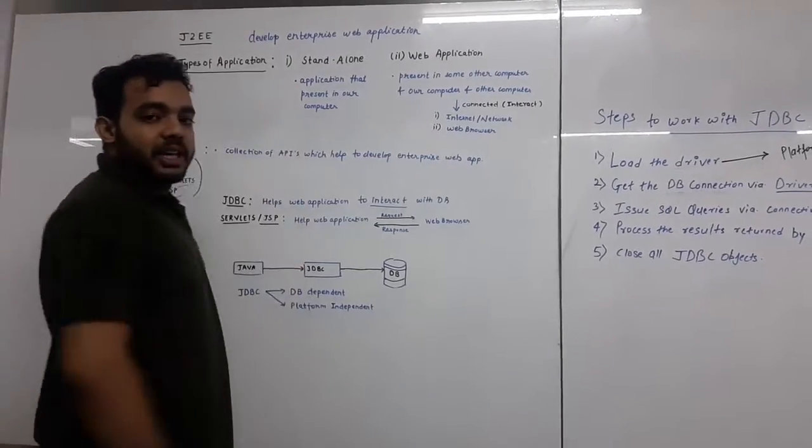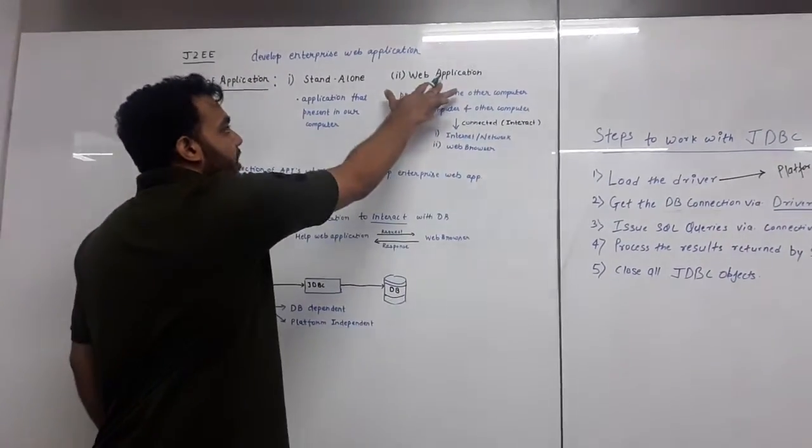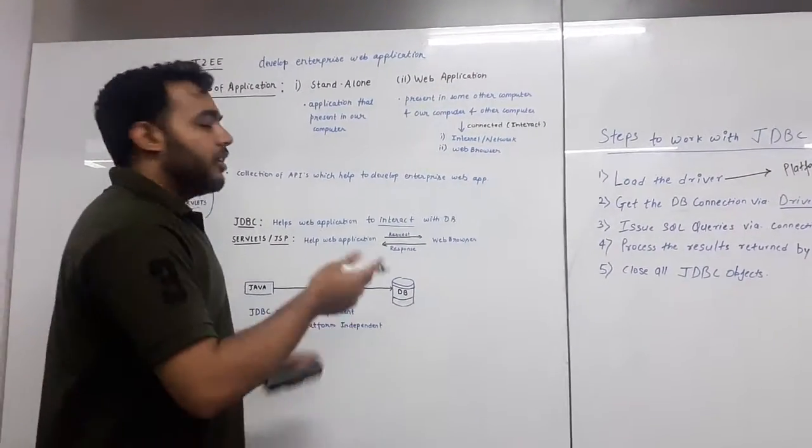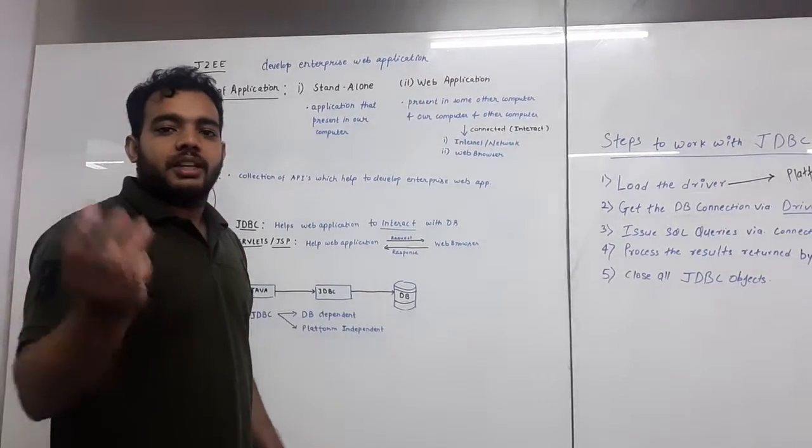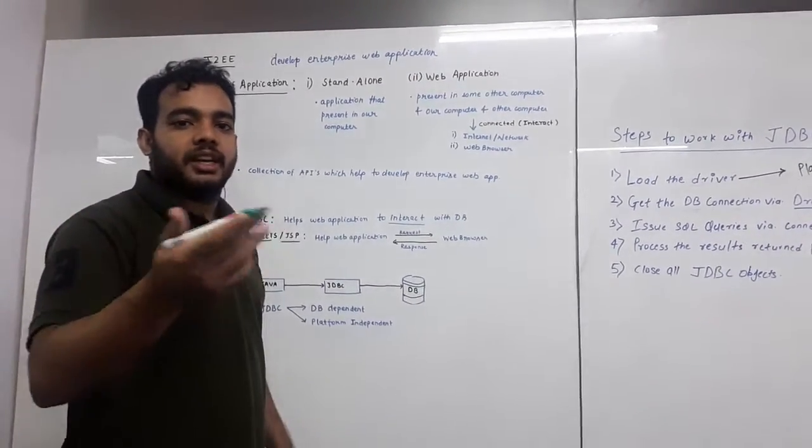There are two types of applications. One is standalone application and the other is web application. Standalone means the application that does not need a connection. For example, everybody has a phone with a clock. The clock does not need any internet connection to work, so it comes under standalone.